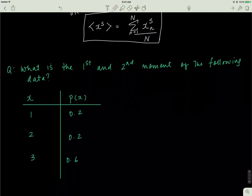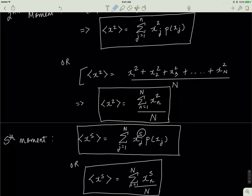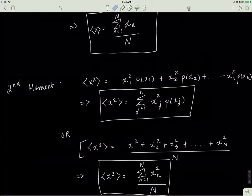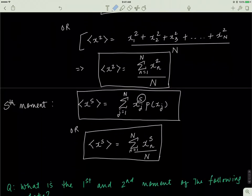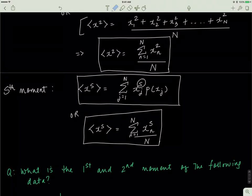In math and chemistry, we'll mostly be dealing with the first and second moment of distribution. In statistics, you mostly deal with the first and second moments as well. In physics, sometimes you'll deal with moments beyond the second — the third, fourth, or fifth — but we won't go into those. It's still important to know how to calculate moments of distribution because it's not really that hard to do.